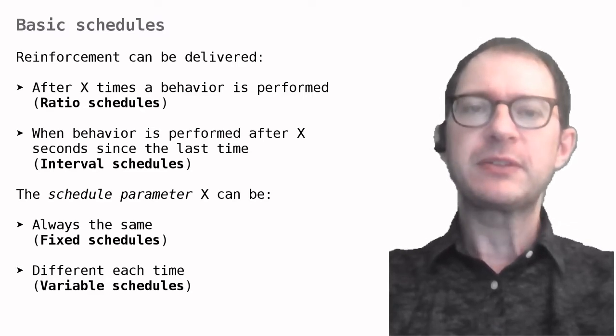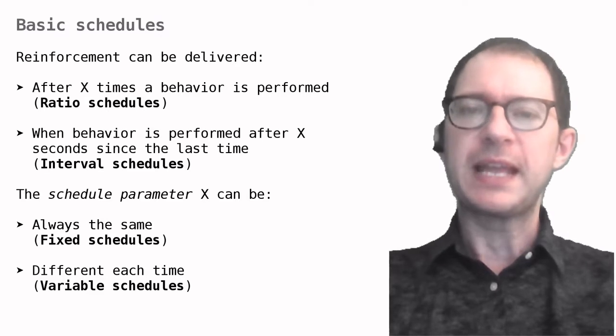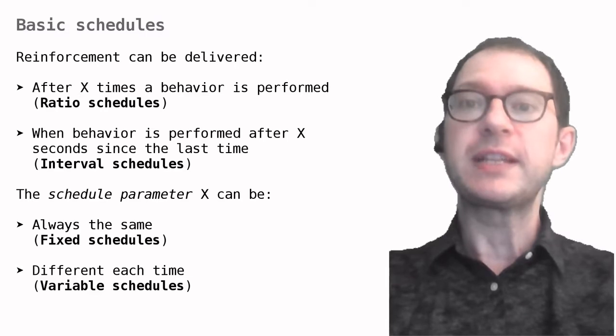The second factor is whether the parameter X in the schedule is always the same, which is called a fixed schedule, or changes every time, which is a variable schedule. Let's see how this works in some detail using concrete examples.